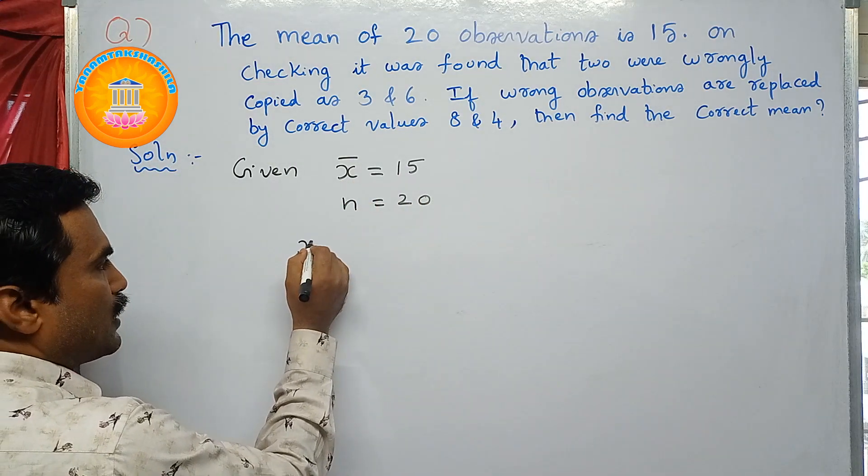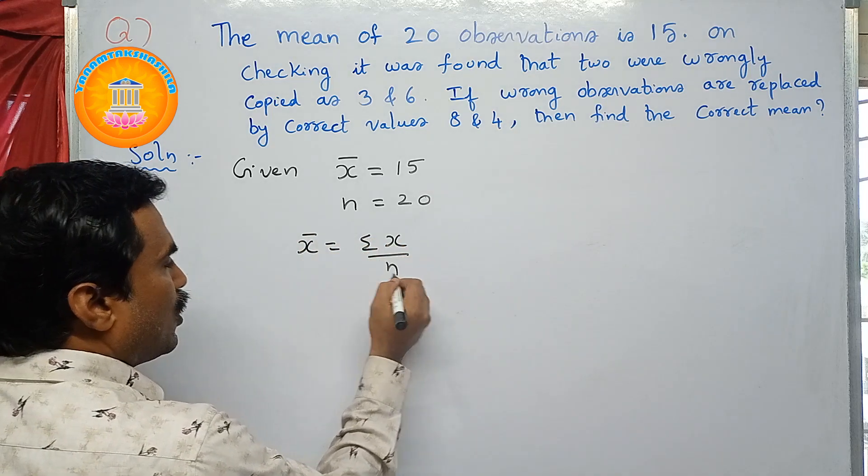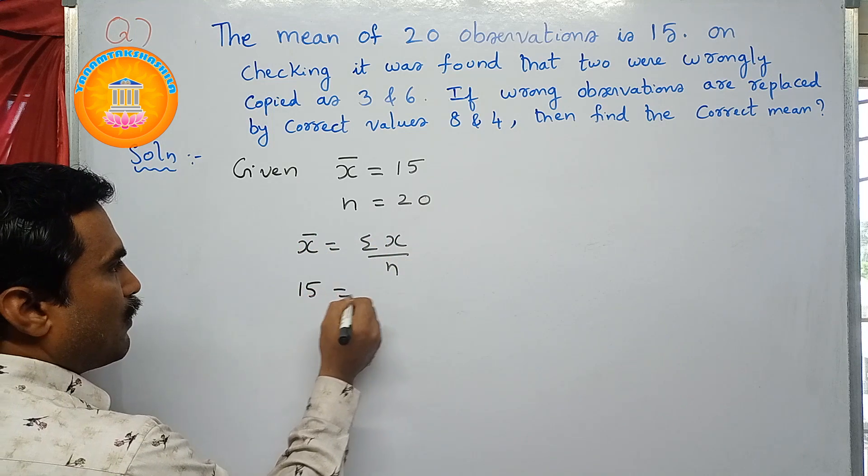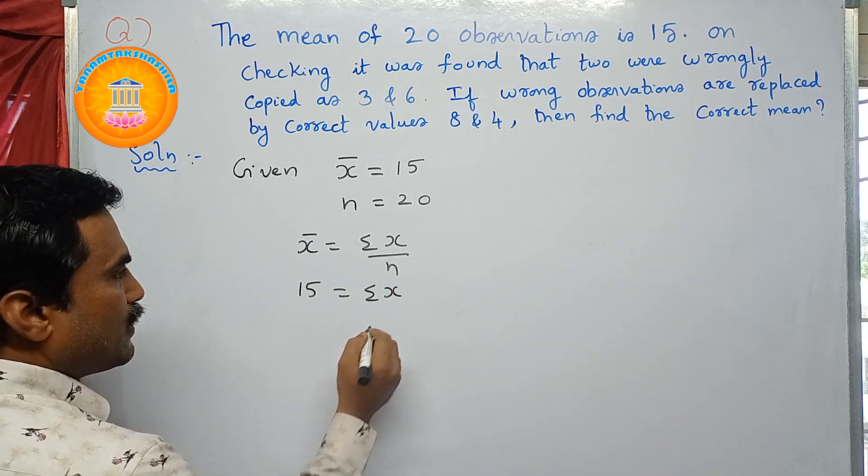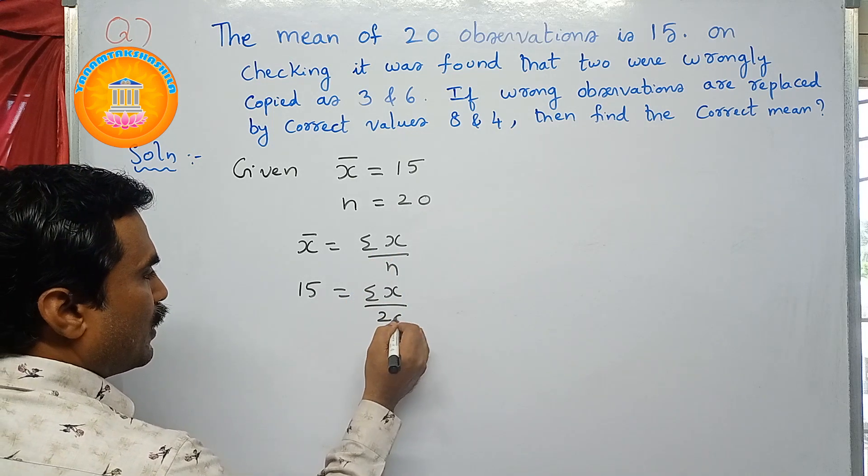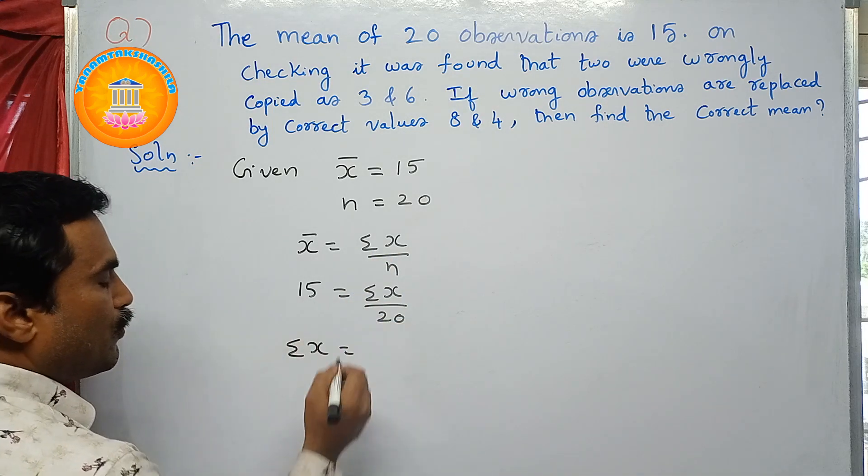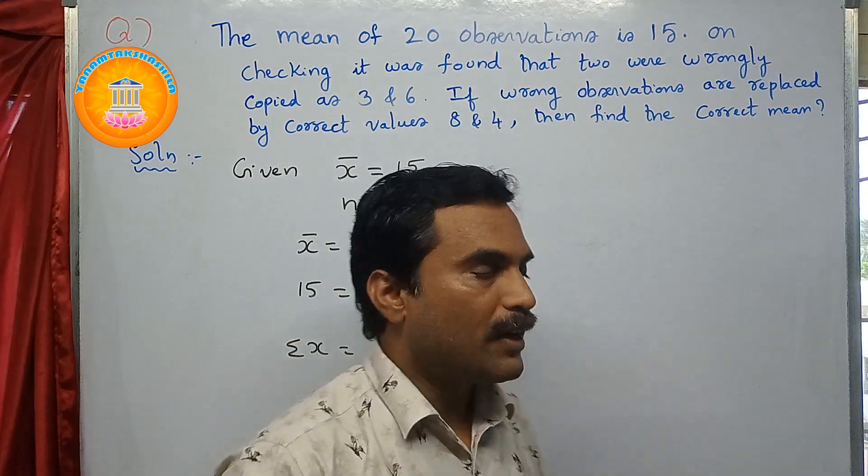We know that x̄ = Σx/n. So what is given here? x̄ is given, so that is 15 = Σx, that is you need to find, divided by n value is 20. So from this, Σx = just cross multiply, 15 into 20, you will get 300. So sum of the observations is 300.